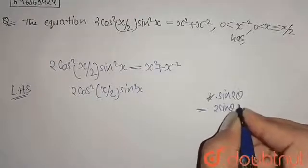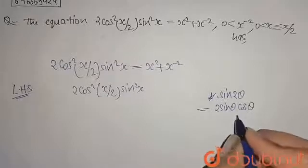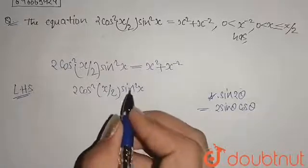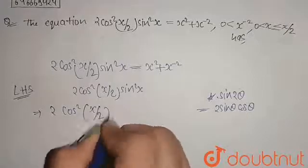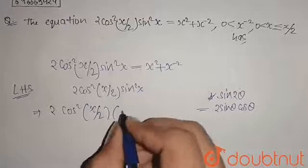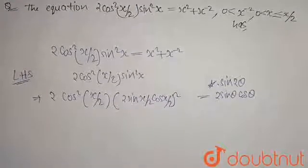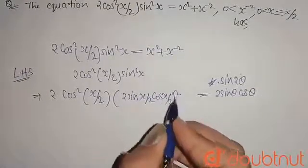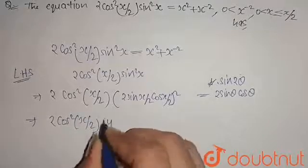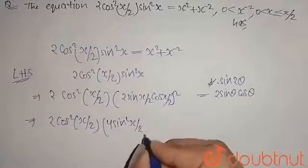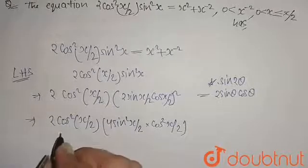If I divide the angle by half, that will be sinθ = 2sin(θ/2)cos(θ/2). So I will substitute: 2cos²(x/2), and at the place of sinx I will write 2sin(x/2)·cos(x/2), whole squared. Opening the square gives 2cos²(x/2)·4sin²(x/2)·cos²(x/2).